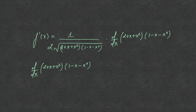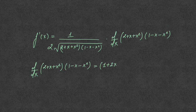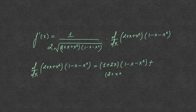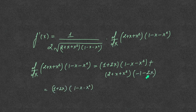Using the product rule, we get the differentiation of the first function (2 plus x plus x squared), which becomes 1 plus 2x, multiplied by the second function as it is, plus the differentiation of the second function — which gives minus 1 minus 2x — multiplied by the first function (2 plus x plus x squared).